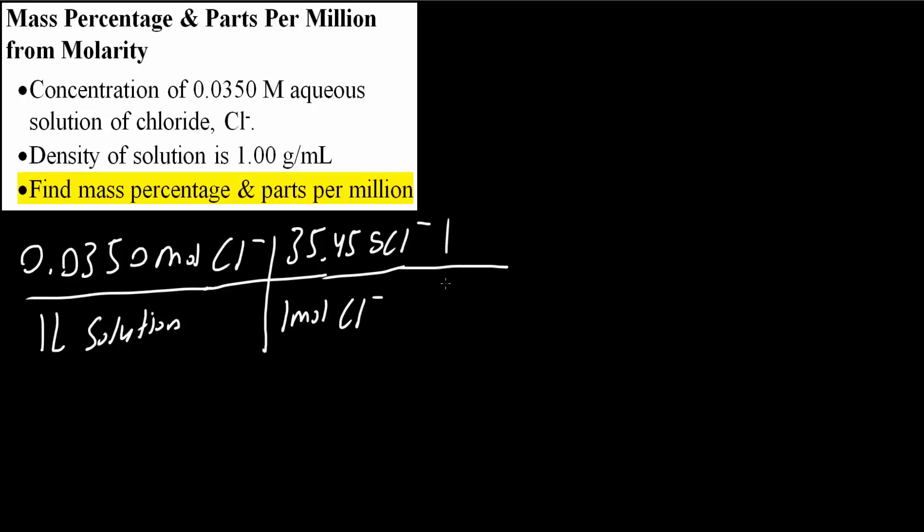Next we convert liters into milliliters, so 1 liter is 1000 mil. Next we will use density. We have a density of the solution is 1 gram per mil, so we have 1 mil per 1 gram of solution.